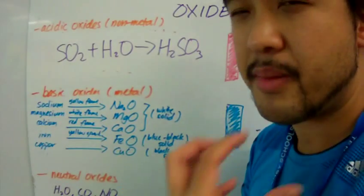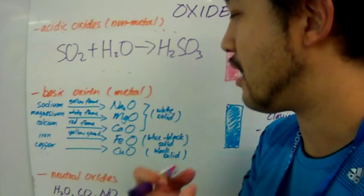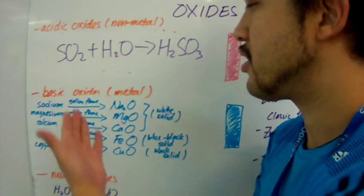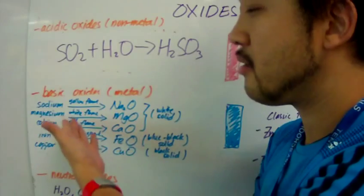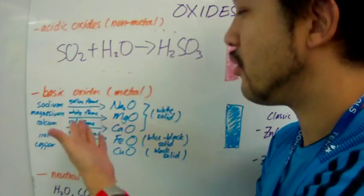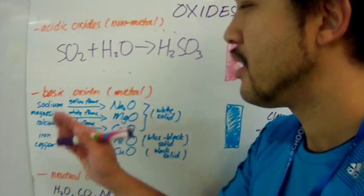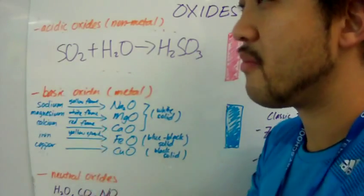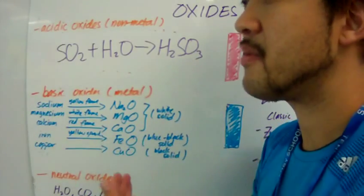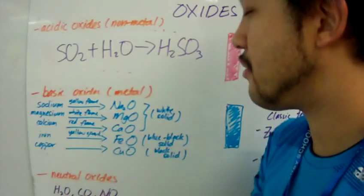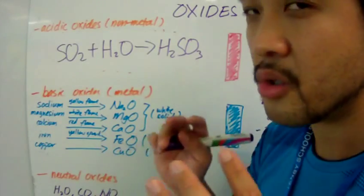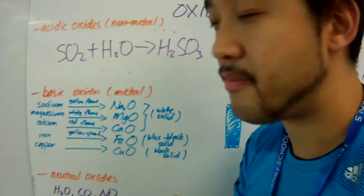Take a bunch of metal, burn it in the presence of oxygen, and you get the oxides. Here I have sodium - burn it in the presence of oxygen, you get yellow flame and sodium oxide. Magnesium, you get white flame and magnesium oxide. Calcium, red flame, calcium oxide.